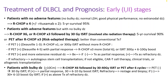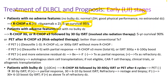For treatment of early stages, we use R-CHOP for four cycles. R stands for rituximab, plus cyclophosphamide, doxorubicin, vincristine, and prednisone. The five-year survival is 95%. For patients with adverse features like bulky disease, elevated LDH, or extranodal disease, R-CHOP for six cycles or R-CHOP for three cycles followed by radiation therapy is used. Their five-year survival is 90%.